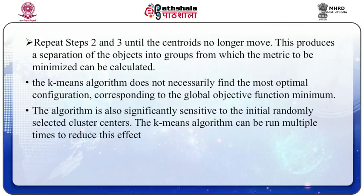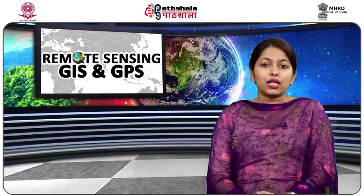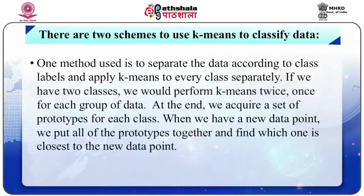Although it can be proved that the procedure will always terminate, the k-means algorithm does not necessarily find the most optimal configuration corresponding to the global objective function minimum. The algorithm is also significantly sensitive to the initial randomly selected cluster centers. The k-means algorithm can be run multiple times to reduce this effect. K-means is a simple algorithm that has been adapted to many problem domains. There are two main types of schemes to use the k-means algorithm to classify data. In scheme number 1, the method used is to separate the data according to class labels and apply k-means to every class separately.